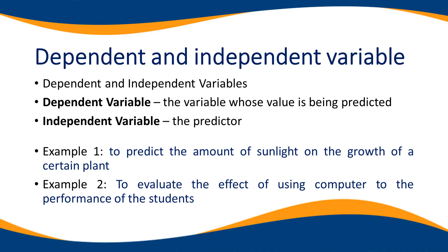Variables may also be dependent and independent. A dependent variable is a variable whose value is being predicted, while an independent variable is the predictor. For example, to predict the amount of sunlight on the growth of a certain plant — the independent variable is the amount of sunlight, and the dependent variable is the growth of the plant, because the plant's growth depends on the amount of sunlight it receives.